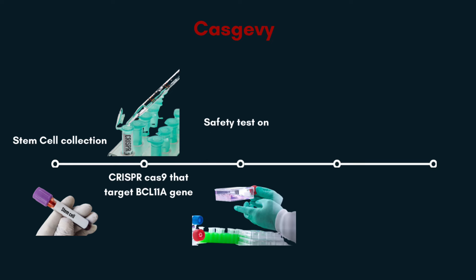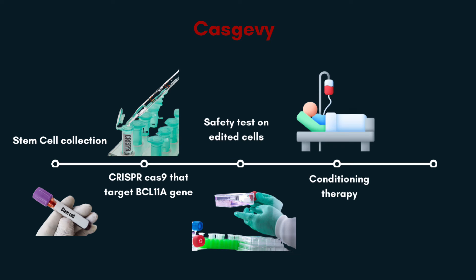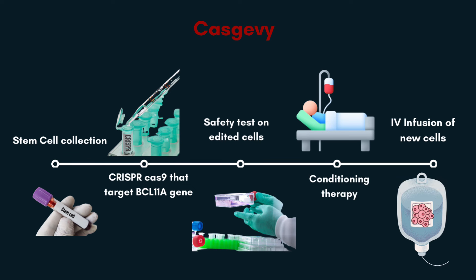The modified cells will be tested for safety. Before infusing the new edited cells, patients will receive a conditioning therapy or myeloablation, which usually involves reducing existing bone marrow cells to create space for the new edited cells. After that, patients will receive the edited cells by IV infusion.